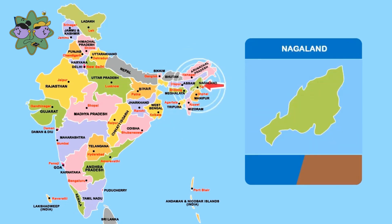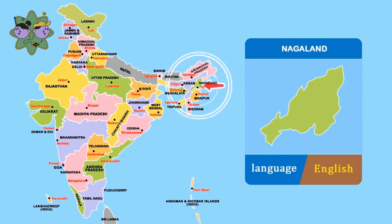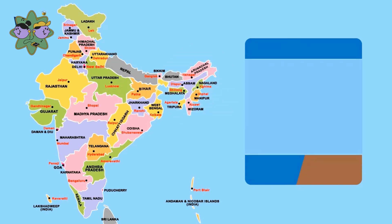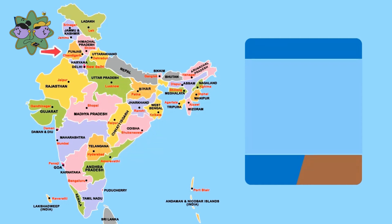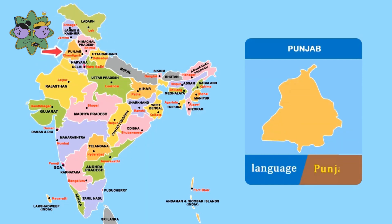Nagaland, Language English. Odisha, Language Odia. Punjab, Language Punjabi.